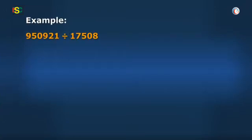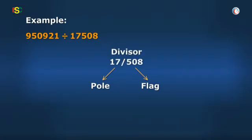As usual, I will begin by breaking divisor from right hand side into pole and flag. And then I will break it as 17 slash 508 because I know the table of 17. Thus, 17 is the pole and 508 is the flag.